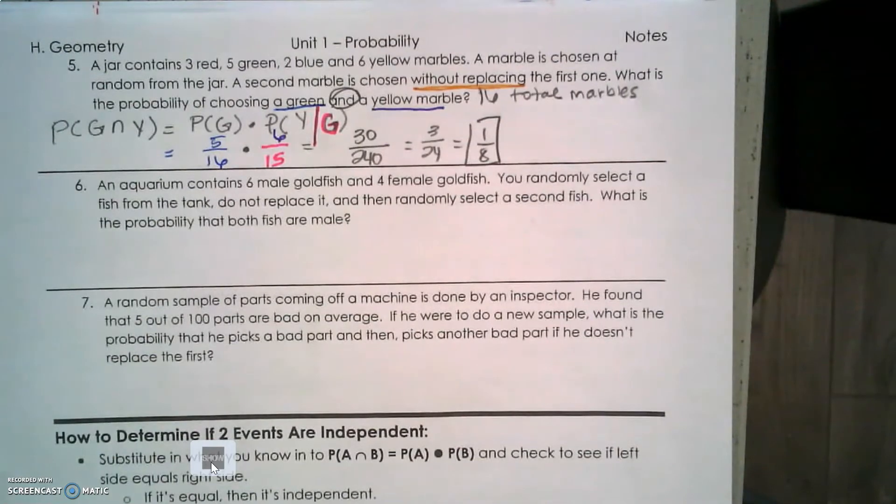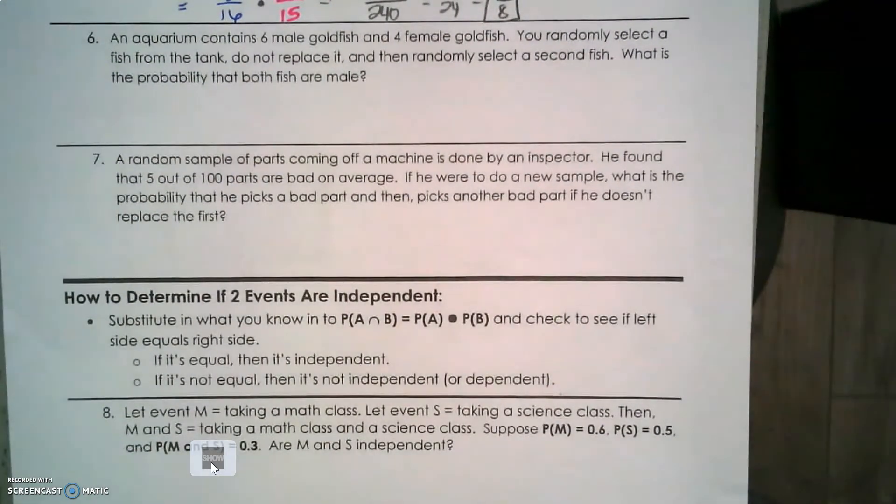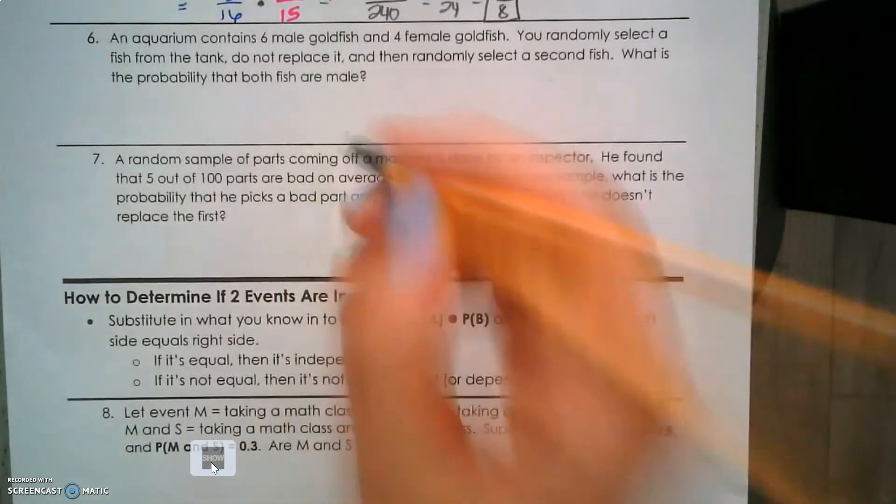An aquarium has 6 male goldfish and 4 female goldfish. You randomly select a fish from the tank, do not replace it, and then randomly select a second fish. What is the probability that both fish are male? Again, we see 'do not replace it'.